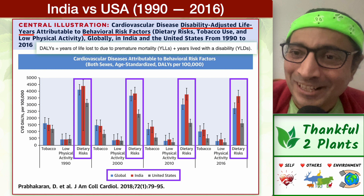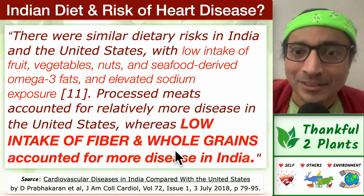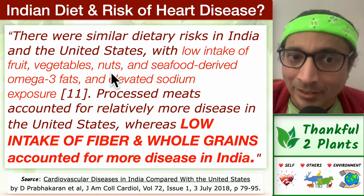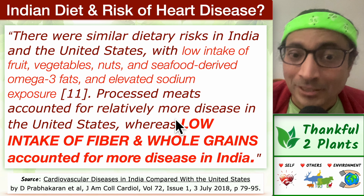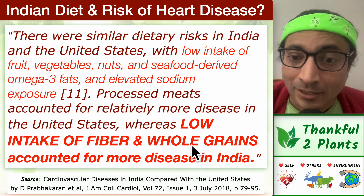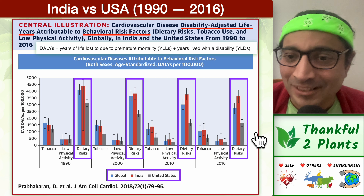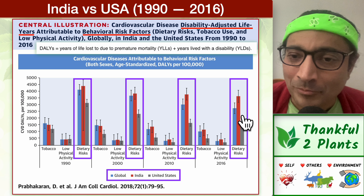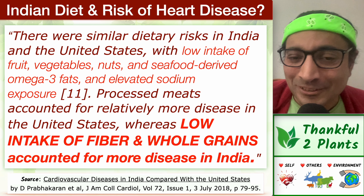It's not easy to understand why this is happening, and we need nutrition insights to grasp results like this. The same research paper shares what is going on. There were similar dietary risks in India and the US, such as low intake of fruits, vegetables, and nuts. But low intake of fiber and whole grains accounted for more disease in India — meaning the excess risk factor is attributed to low fiber and low whole grain intake.